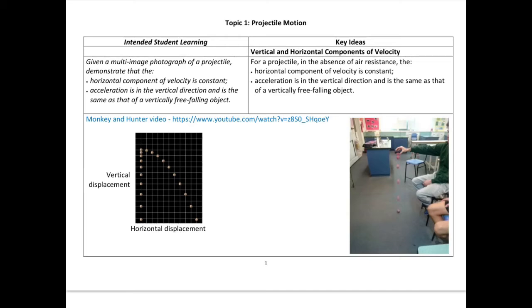The starting point for projectile motion is thinking about multiple image photographs. Back when I was in high school, we used to throw a projectile in a dark room and hold the aperture down on the camera to get a long exposure. Every time the light flashed, we'd get a little image of where the projectile was, which we could use to analyse its motion. We'd send them off to a photo lab, and usually they'd come back two weeks later and wouldn't have developed properly anyway, so the teacher would tell us what it should look like.